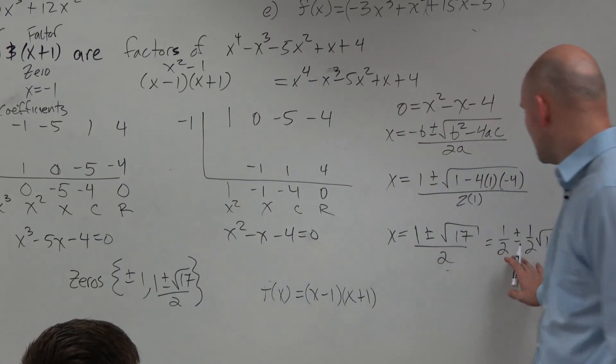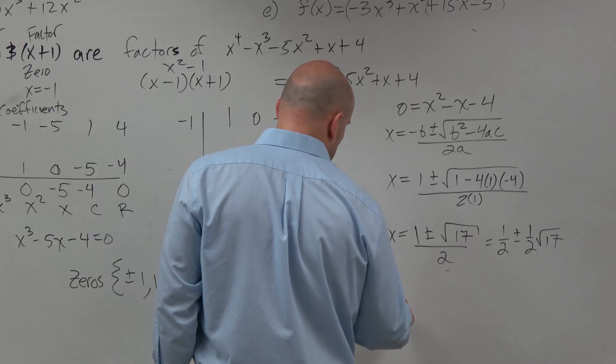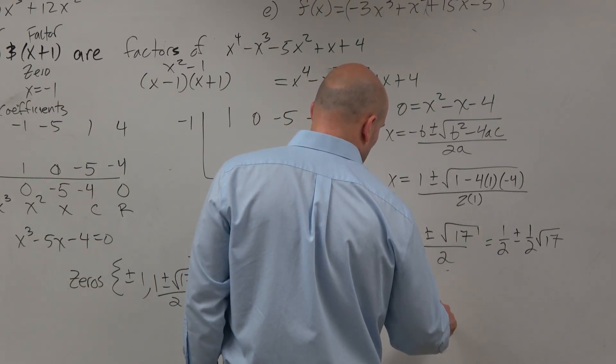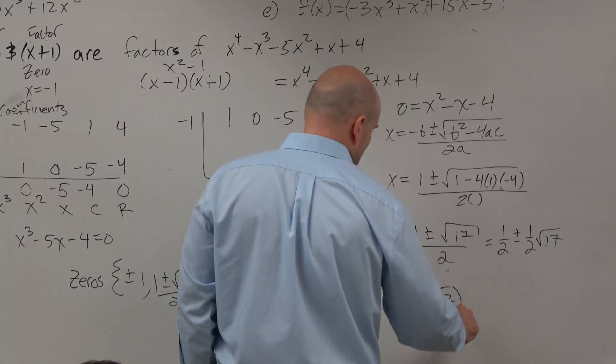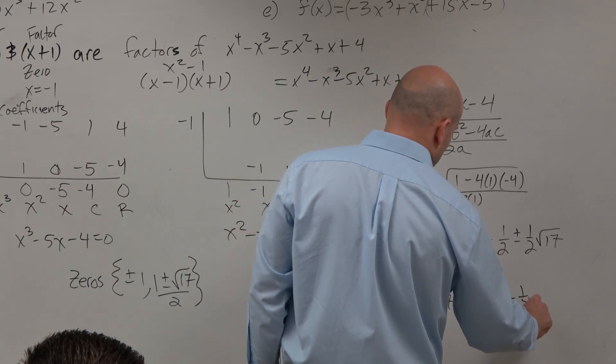And then these factors, I'm just going to use this. So the factors of the two linear factors would be x minus 1 half minus 1 half square root of 17 times x minus 1 half plus 1 half square root of 17.